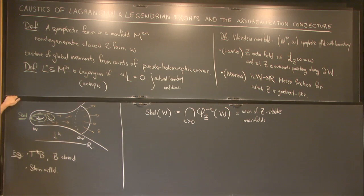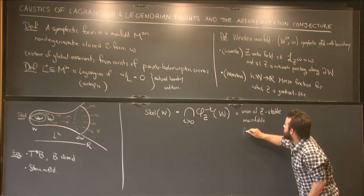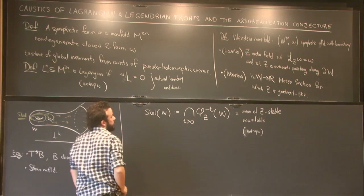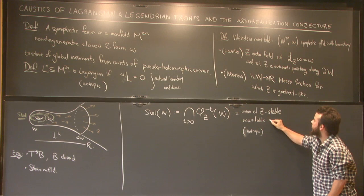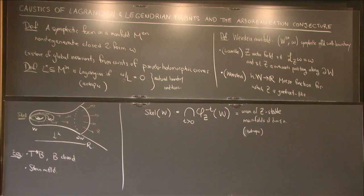And an observation that was already known to Milnor is that these Z-stable manifolds are isotropic. So isotropic in the sense that each of these manifolds satisfies these conditions. And so these manifolds have dimension at most half. So the skeleton is a stratified subset, a subset stratified by smooth manifolds of at most half the dimension.